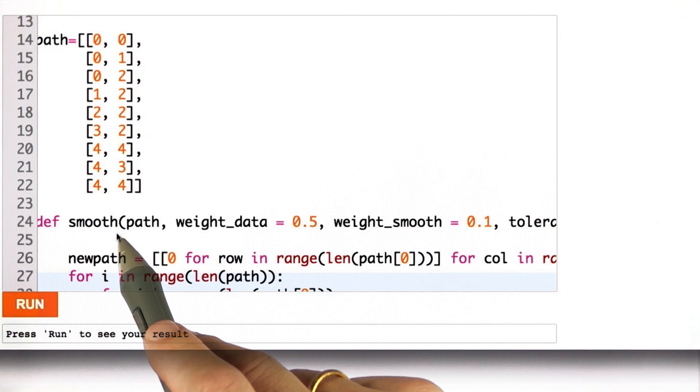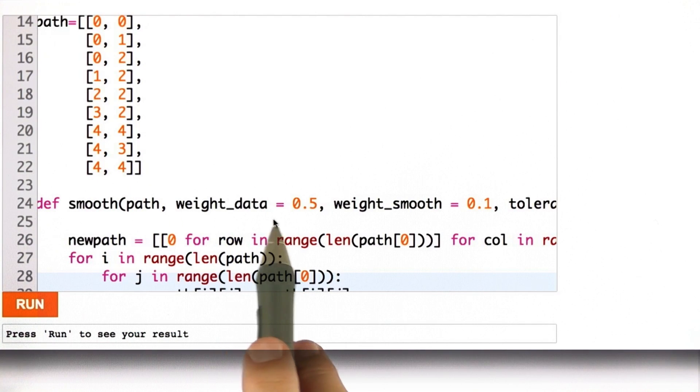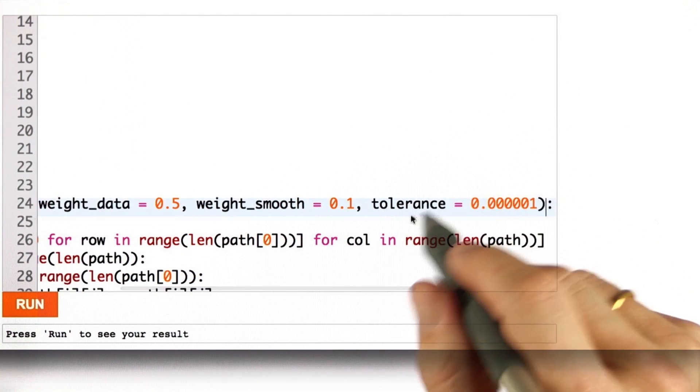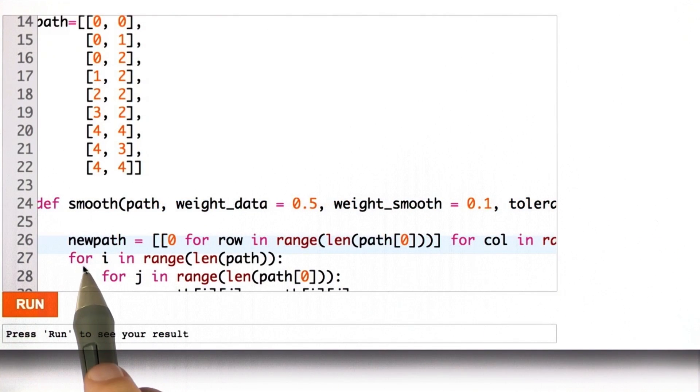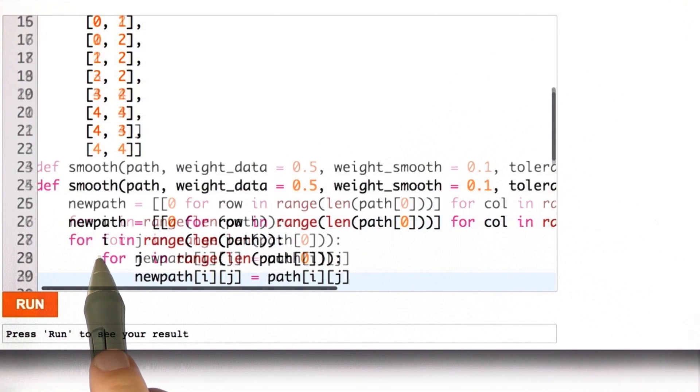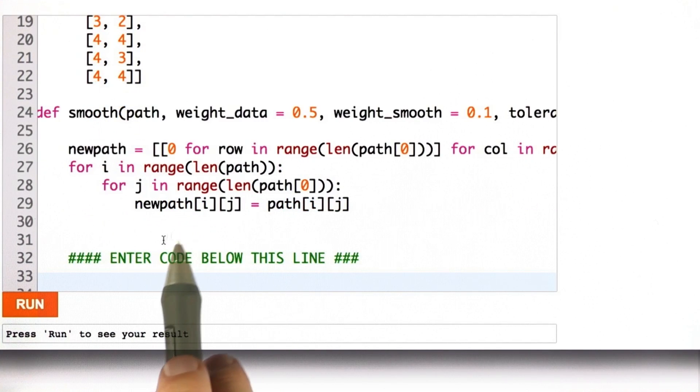I now want you to implement the function smooth, which takes as an input the path, our two weighting factors, and a small tolerance variable, which I'll explain in a second. And it creates the new path, which are the y's in our equation so far, from the old path. This is a deep copy over here. And then below the line,